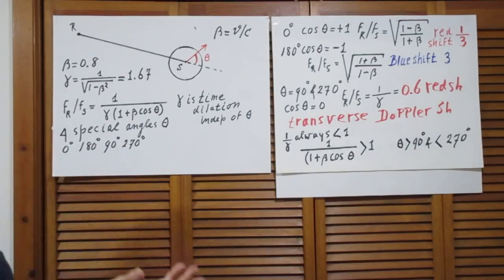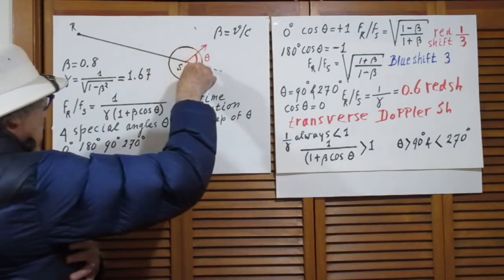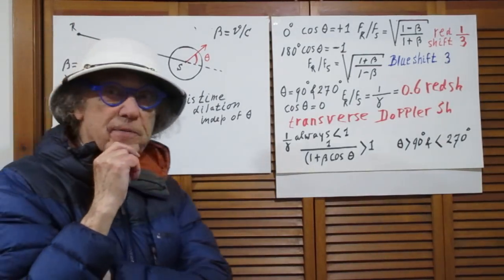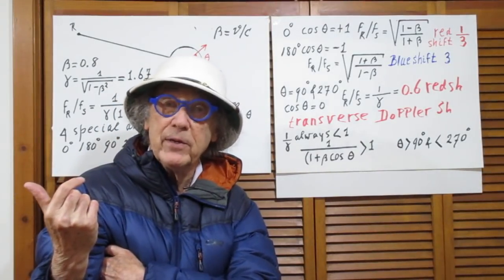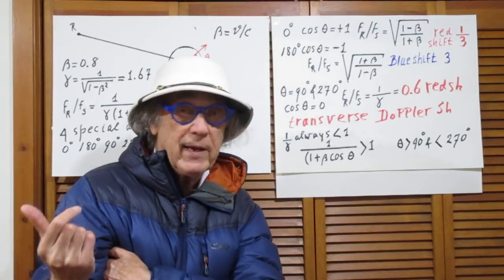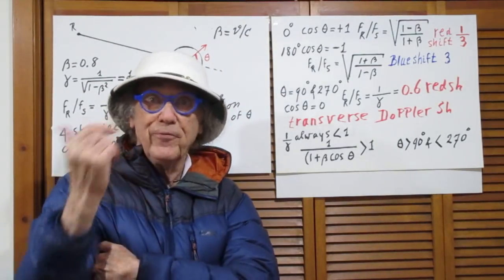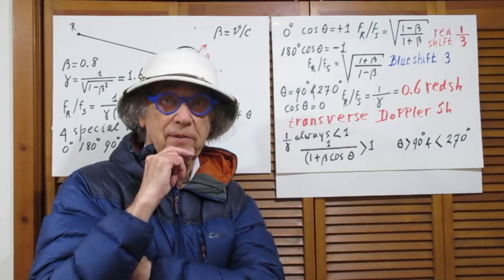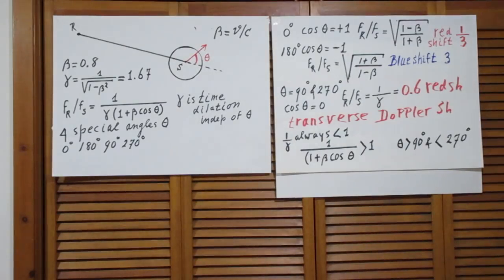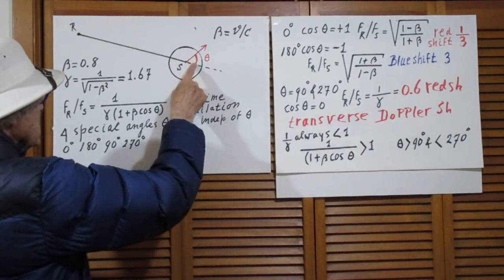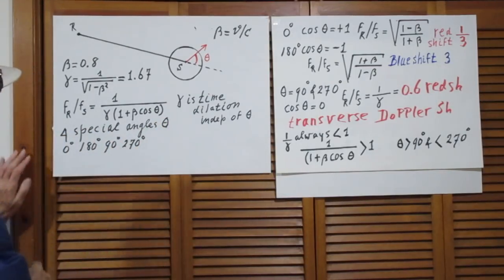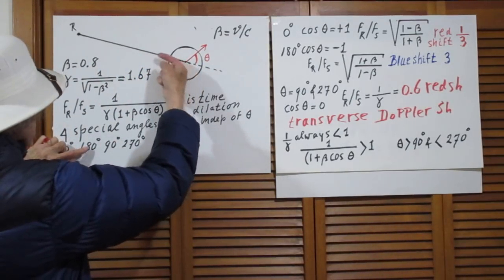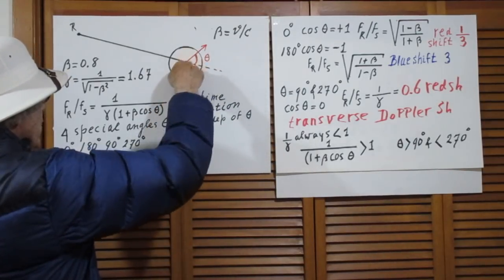Now we all know that theta can have such a value that you receive a frequency higher than the frequency emitted by the source, but you can also have a theta that you receive a lower frequency. In the first case we call that blue shift. In the second case we call that red shift. All of you know that. So keep in mind that this is theta. So there are four special angles: 0 degrees, 180 degrees, 90 degrees, and 270 degrees.